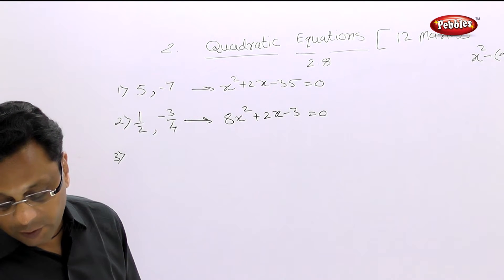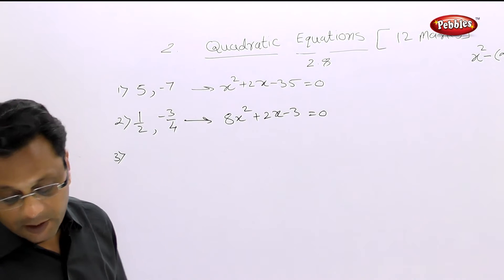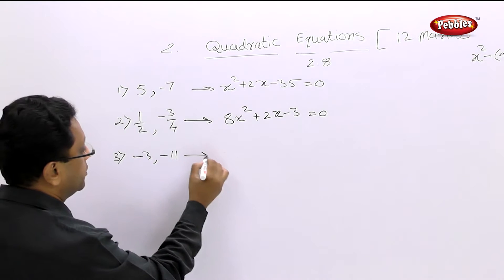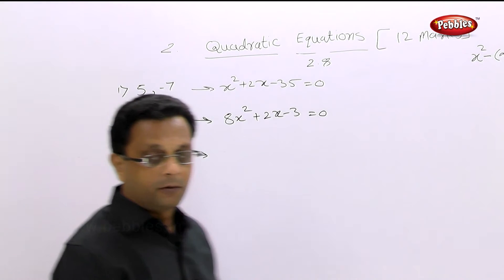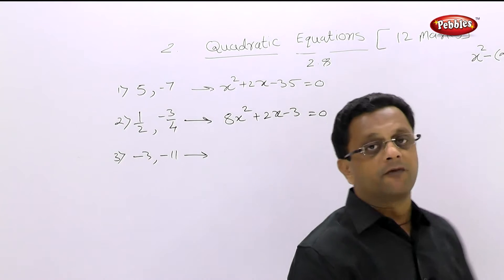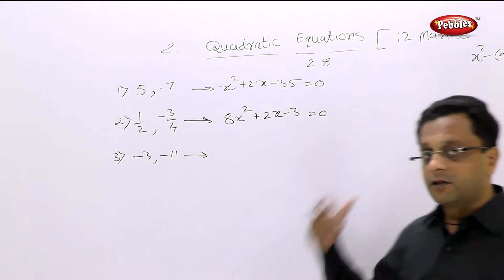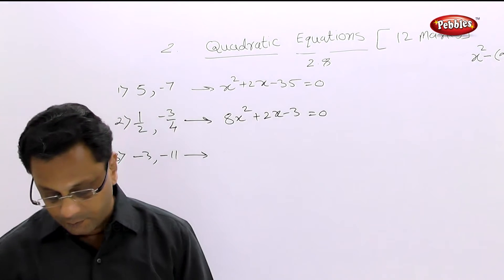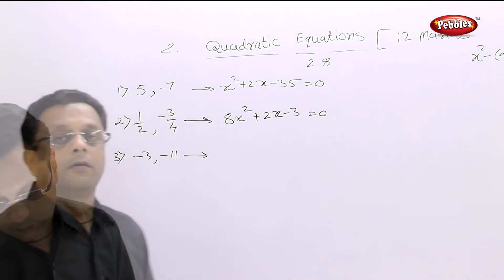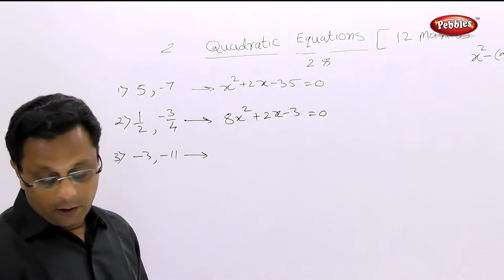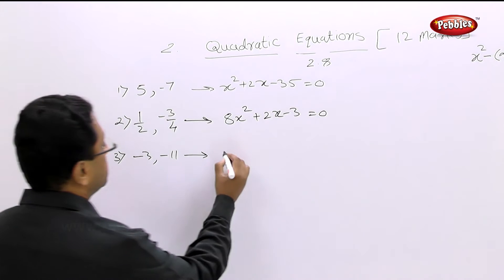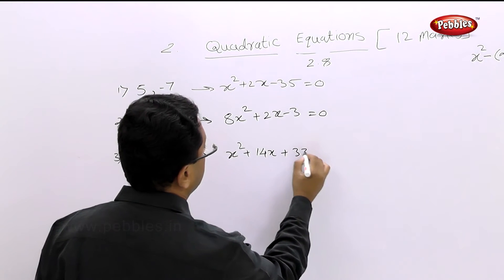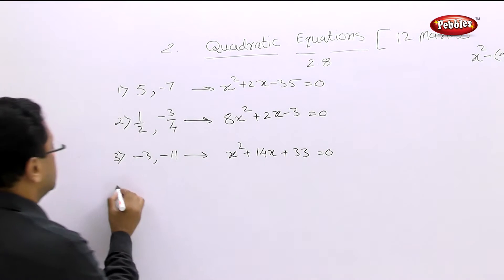Example 3: the given values are minus 3 and minus 11. Pause your video and quickly solve this. Find out alpha plus beta, alpha times beta, substitute and you should get the answer. The answer is x squared plus 14x plus 33 equal to 0.